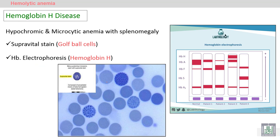In Hemoglobin H disease, absence of three alpha globin genes leads to formation of the abnormal Hemoglobin H, which consists of four beta globin chains. Excess beta chains precipitate inside the RBCs, appearing like golf ball cells. All of these are golf ball cells due to deposition of excess beta chains. These golf ball cells can be seen using supravital stain, which is the same stain used for staining reticulocytes.